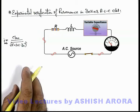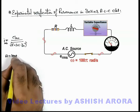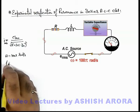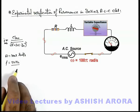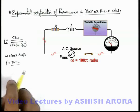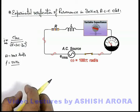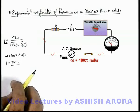Here let us consider the angular frequency of circuit is 100π radians per second, or we can see the frequency will be 50 hertz. And in this situation, the capacitor is chosen at such a value that the ammeter is giving us some reading. Now we can see we start increasing the value of capacitor.